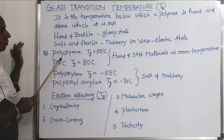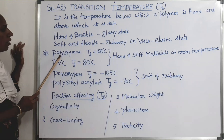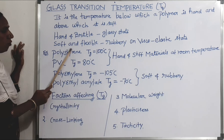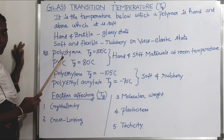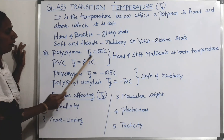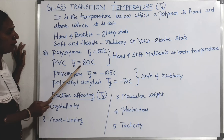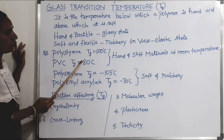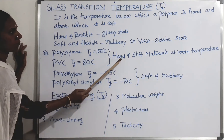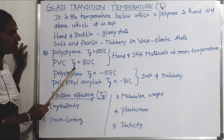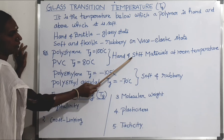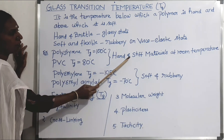Let us see the examples: polystyrene and polyvinyl chloride. For polystyrene, the Tg value is 100 degrees centigrade. For polyvinyl chloride, the Tg value is 80 degrees centigrade. Both these polymers are hard and stiff materials at room temperature, based on their glass transition temperature values.